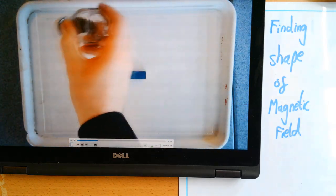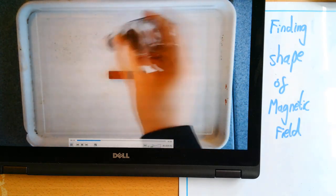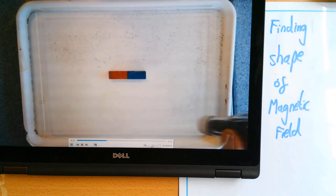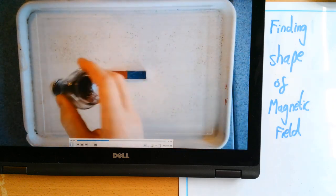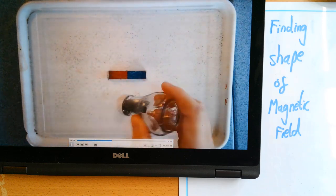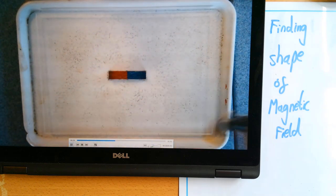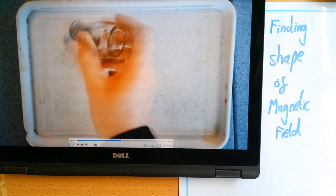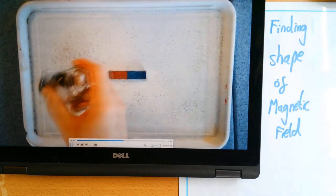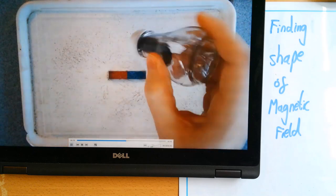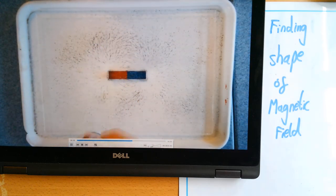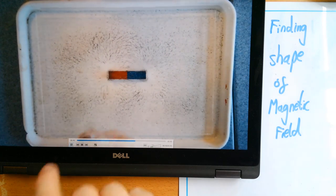Next thing I'm going to do is sprinkle the iron filings over the top. The iron filings are very tiny shavings of iron that are magnetic materials. So what they do is as they fall down, they get attracted and line up with the magnetic field lines of the bar magnet, and you can see the field lines are starting to form.